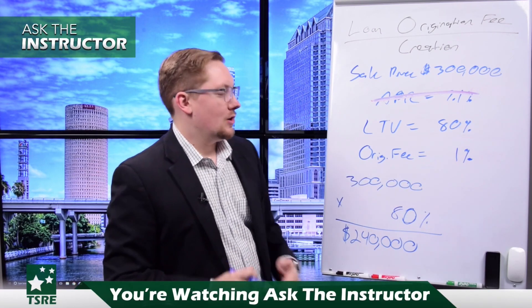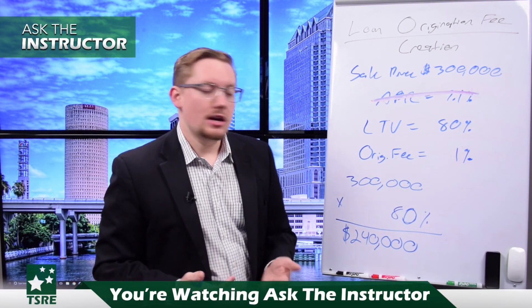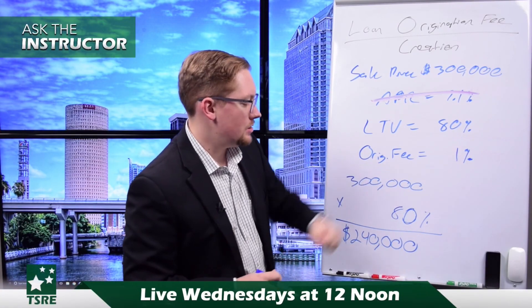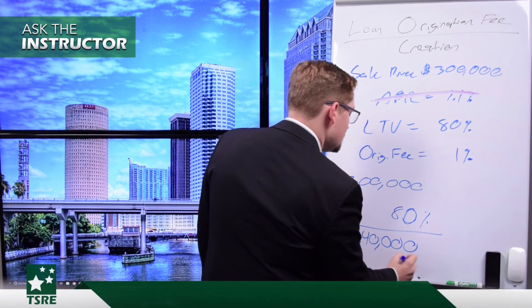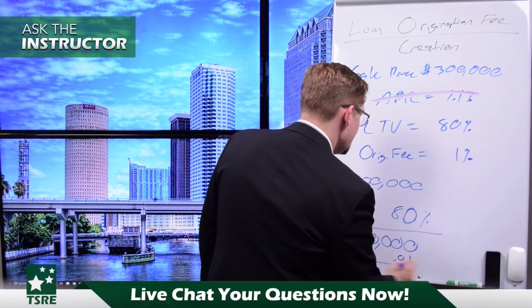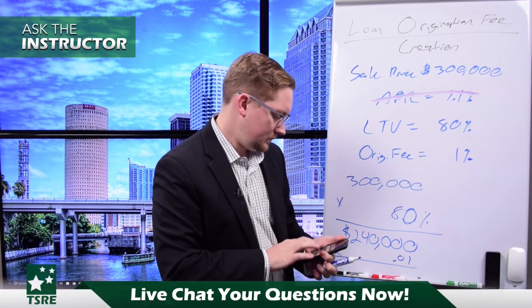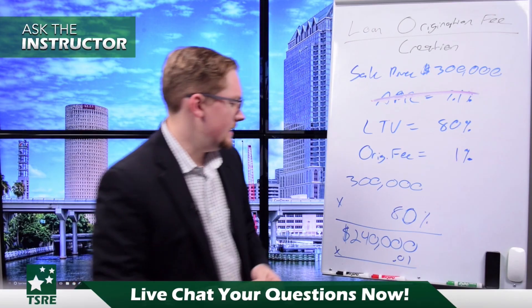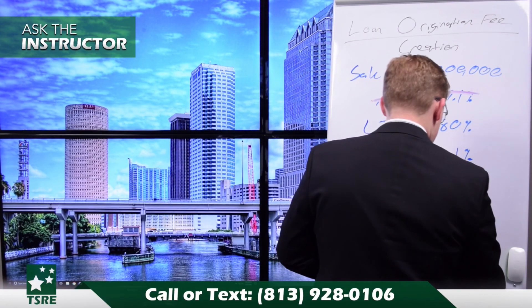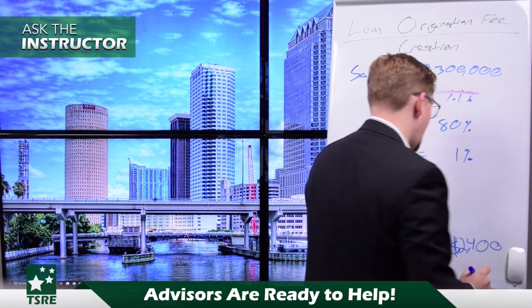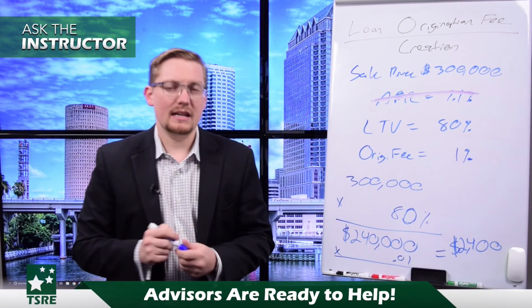Back to our situation — finding the loan origination fee. We have the 1% origination fee, so all we do is take 1% (0.01 as a decimal) of $240,000. That gives us $2,400 as our origination fee.